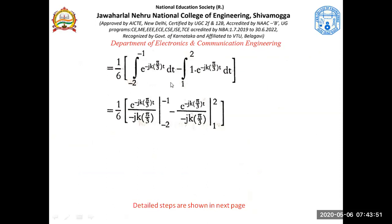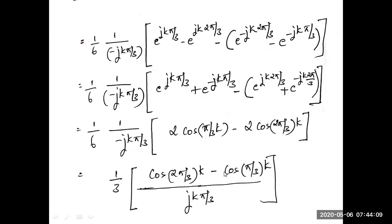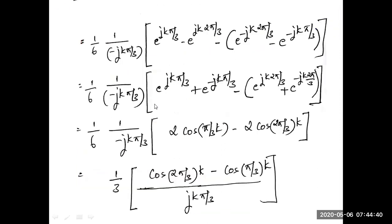The integral splits into two terms: from −2 to −1 where X(T) = 1, and from 1 to 2 where X(T) = −1. After integrating and applying the limits carefully, the exponential terms are evaluated. At limit −1 we get e^(jkπ/3); at limit −2 we get e^(jk2π/3). Similarly for the second integral, the minus sign carries through.